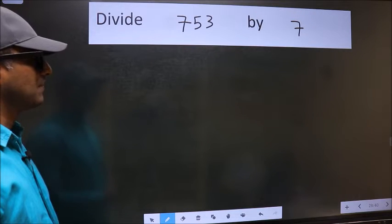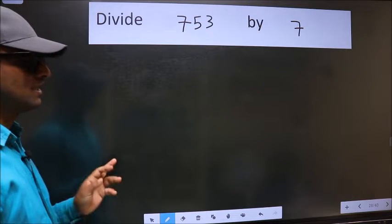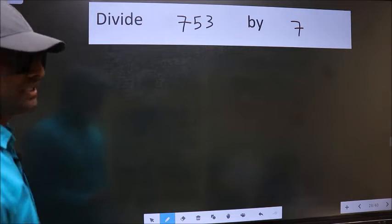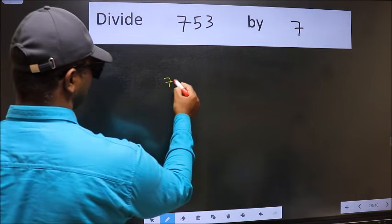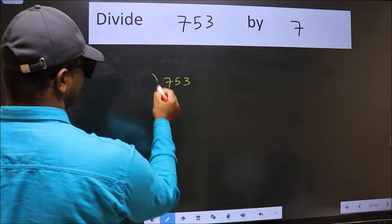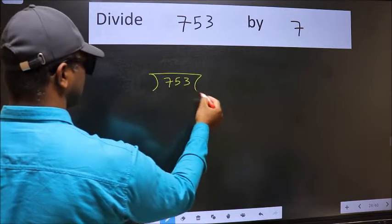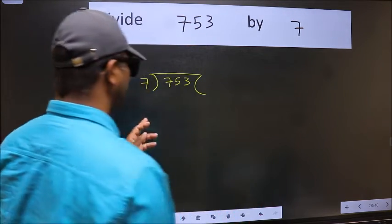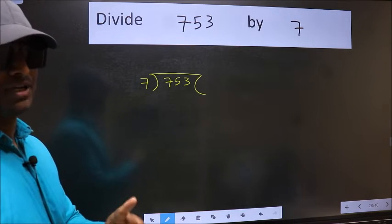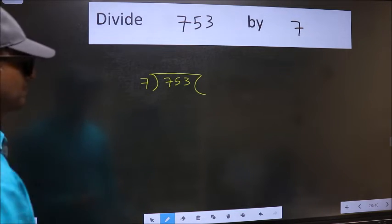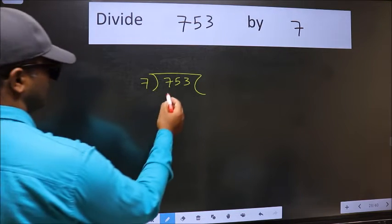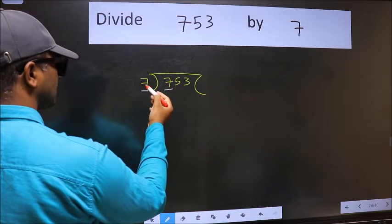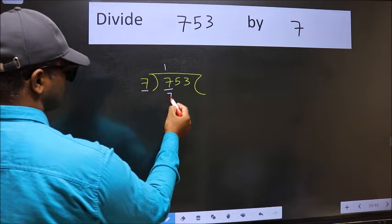Divide 753 by 7. To do this division, we should frame it with 753 here and 7 here. This is your step 1. Here we have 7 and 7 — when do we get 7 in 7? From the 7-times table: 7 × 1 = 7.